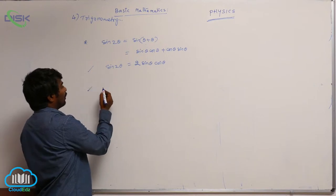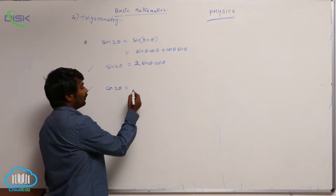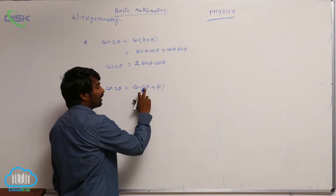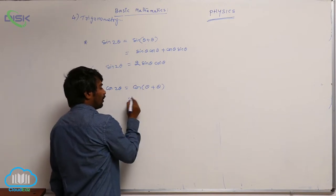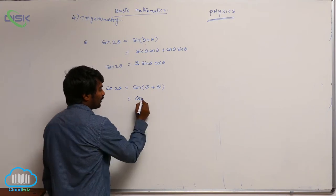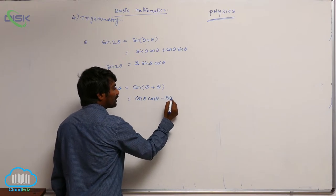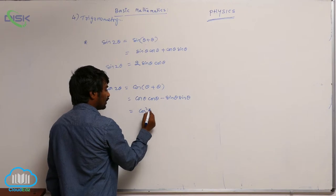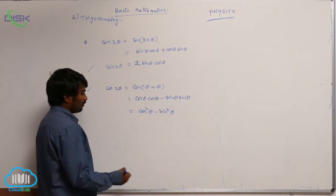Next, cos 2θ. You can write cos(θ + θ), like cos(A + B). The formula for cos(A + B) is cos A cos B − sin A sin B. That means cos θ cos θ − sin θ sin θ, so cos 2θ = cos²θ − sin²θ.